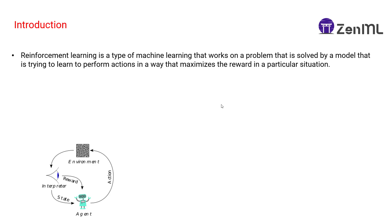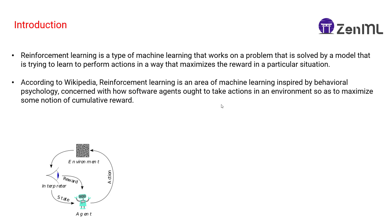The agent will perform an action in that environment and if the action is correct it gets a reward, as well as it gets the current state. The current state means it's the observations that the agent has observed through its actions. That's a simple definition of reinforcement learning.